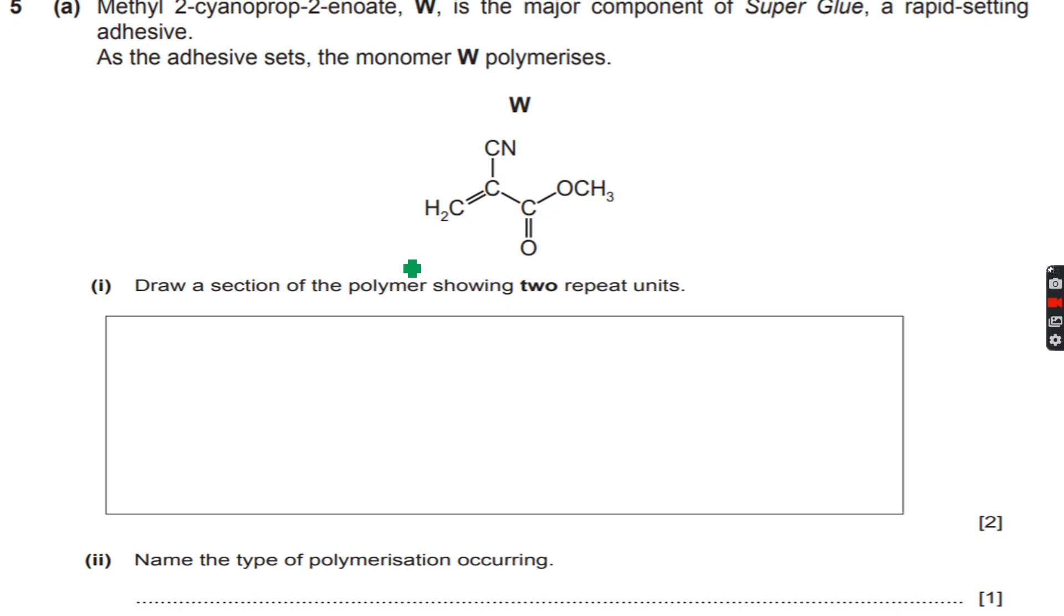So we will have to carry out this polymerization through addition polymerization. Now let's take this carbon. This carbon is attached to a CN like this, and it is also attached to a CO2CH3, which is the ester group, and this will be a continuation bond.